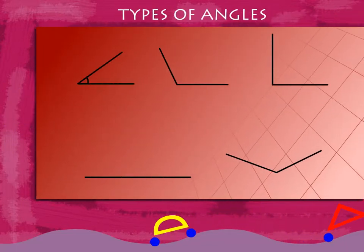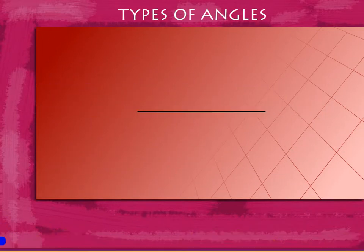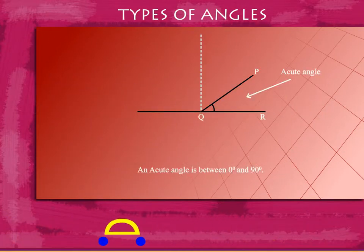Types of Angles: There are different types of angles depending on their measure. Acute angles are angles measuring between 0 degrees and 90 degrees.